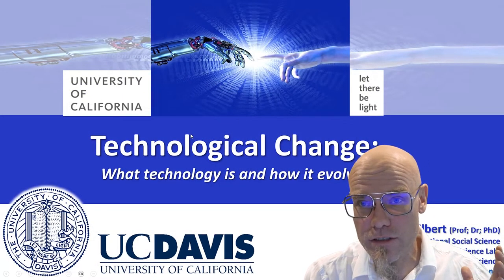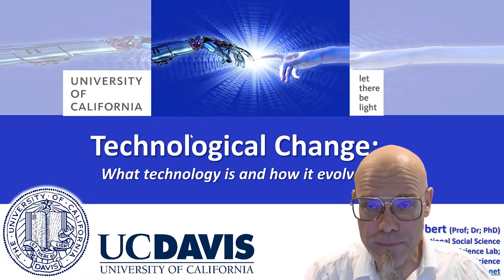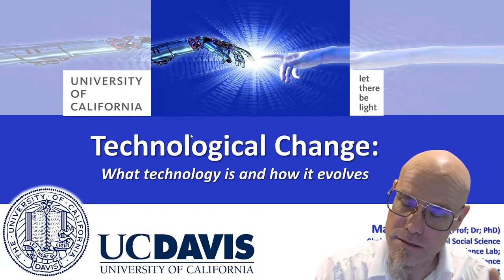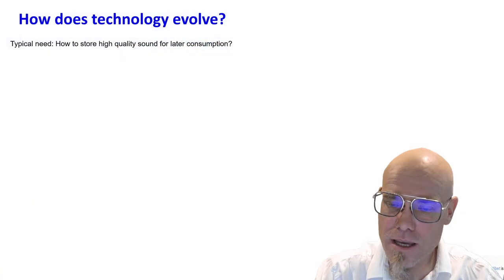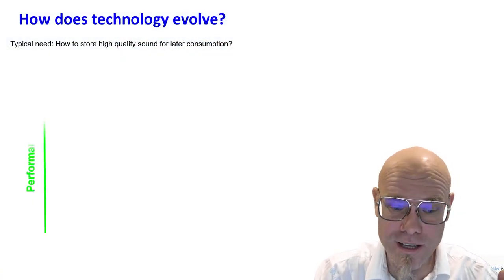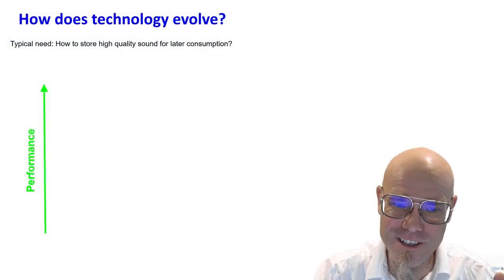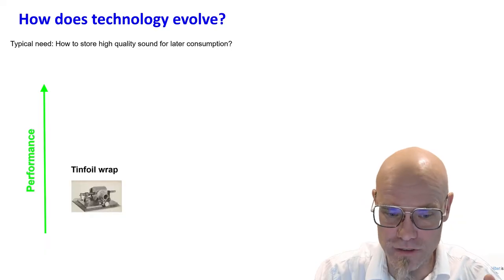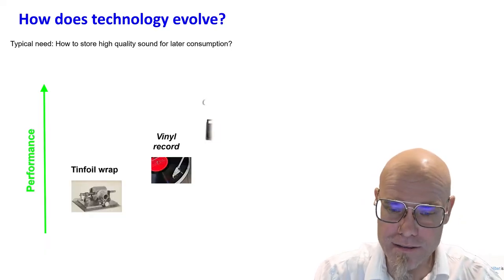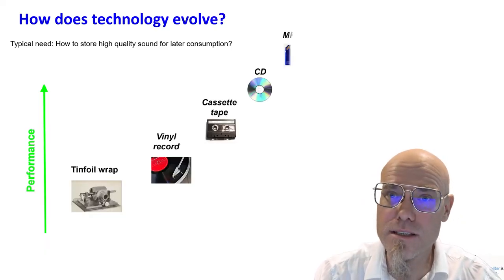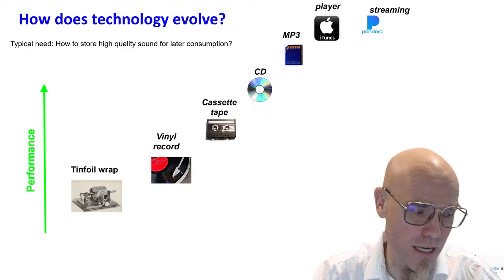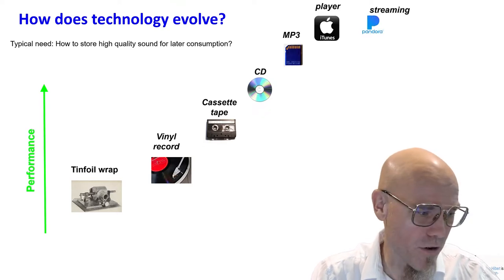First, let's go into the theory of technological change, which is a sub-part of innovation theory, and see how technology evolves. Let's take a pretty old information technology that can store sound, for example. We started with the tinfoil wrap from Edison, and then went through different innovations until we have our streaming services nowadays.